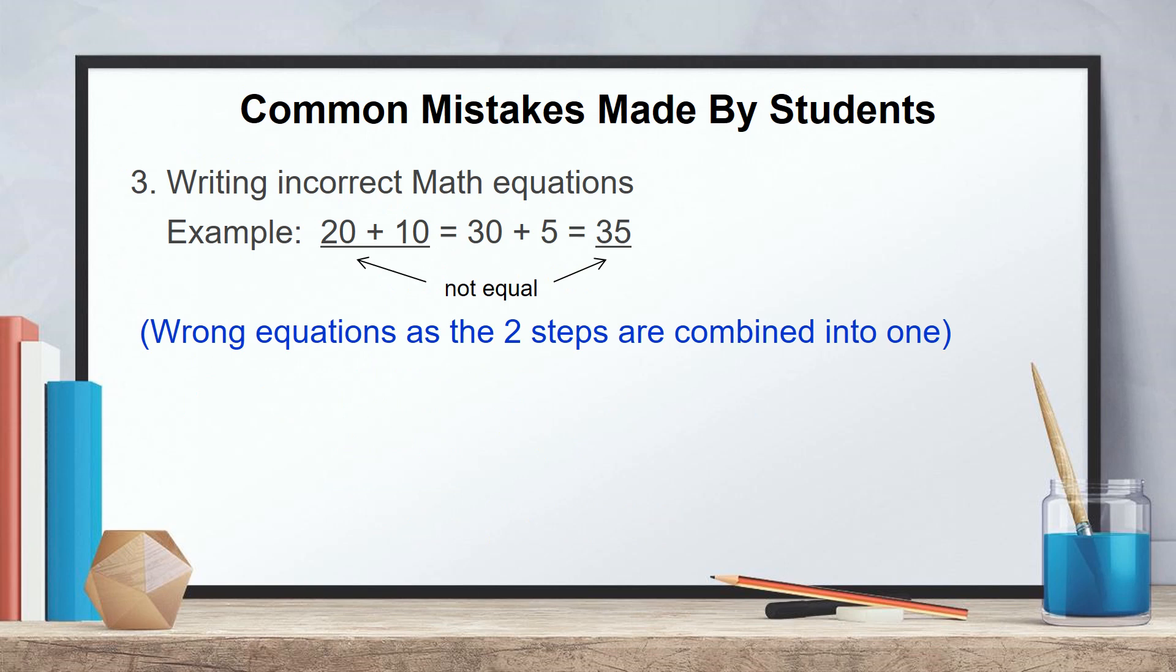Another common mistake is writing incorrect mathematical equation. For example, 20 plus 10 equals 30. And then the student wants to write another equation. But they cannot combine the two equations because they are not equal. Another common mistake is omission or incorrect units of measurement. For example, one kilometer supposed to be 1,000 meters. And if the child converts wrongly, then it will affect the calculation.